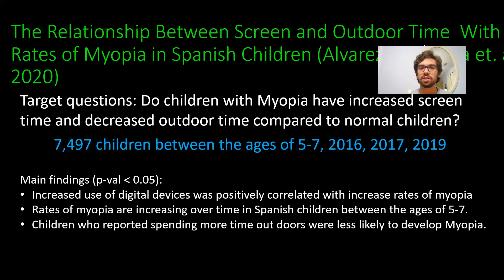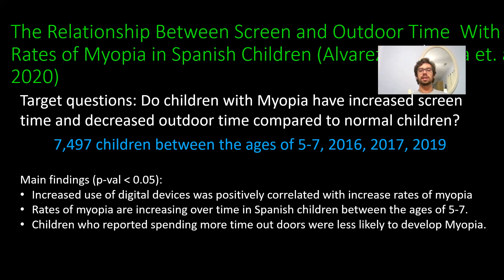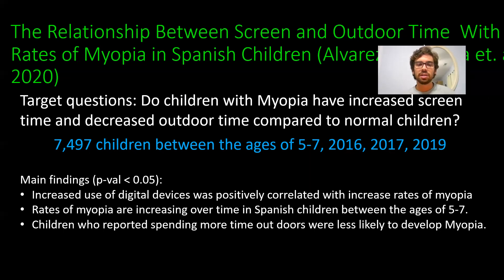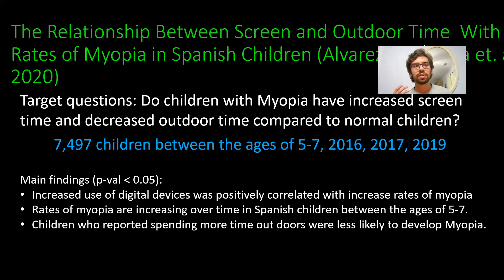The longitudinal study showed that rates of myopia are actually increasing over time. In just three years — 2016, 2017, and 2019 — it shows more children losing the ability to see far away, having onset myopia. Children who reported spending more time outdoors were actually less likely to develop myopia. This connects back to one of the main causes: less time outdoors. Evidence shows that exposure to sunlight is crucial for the development of young children's eyes.